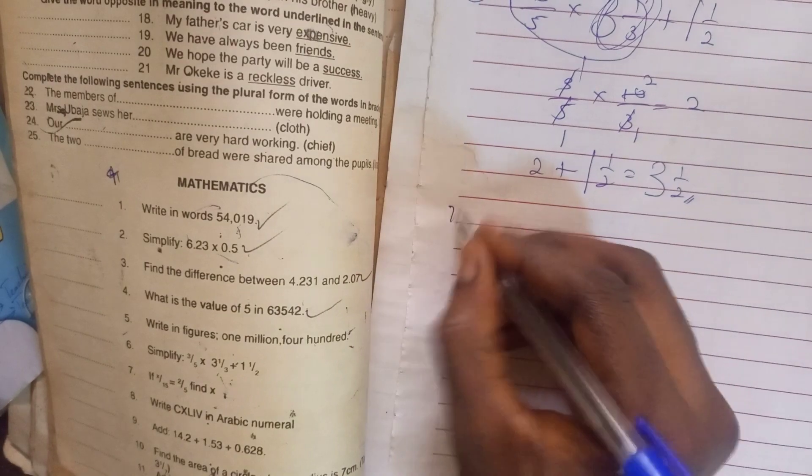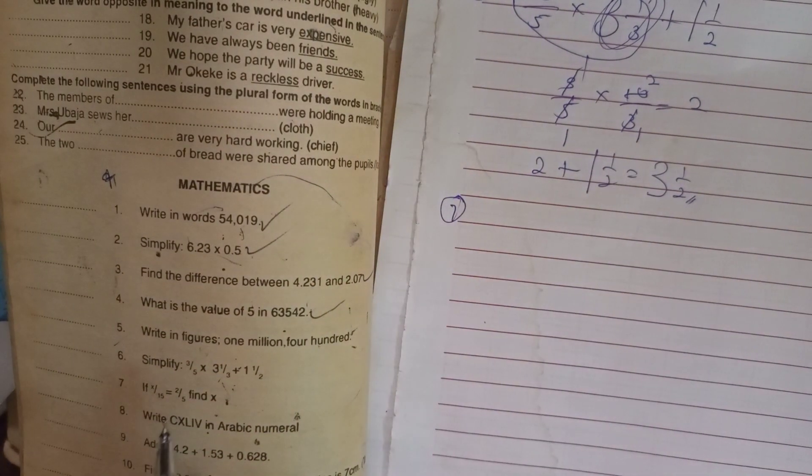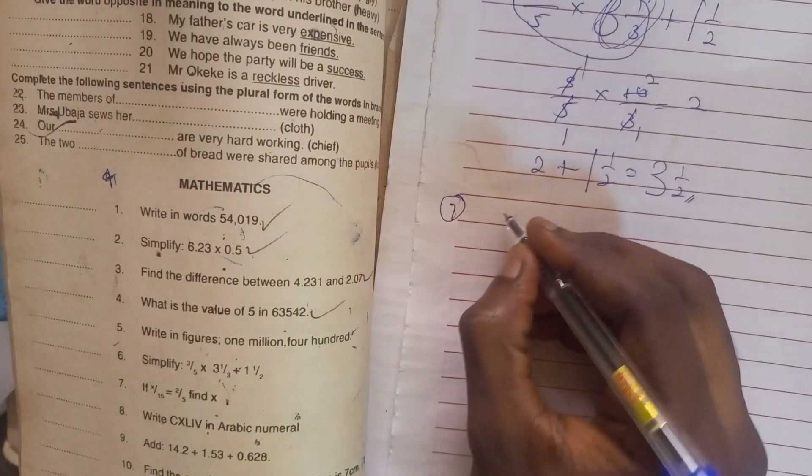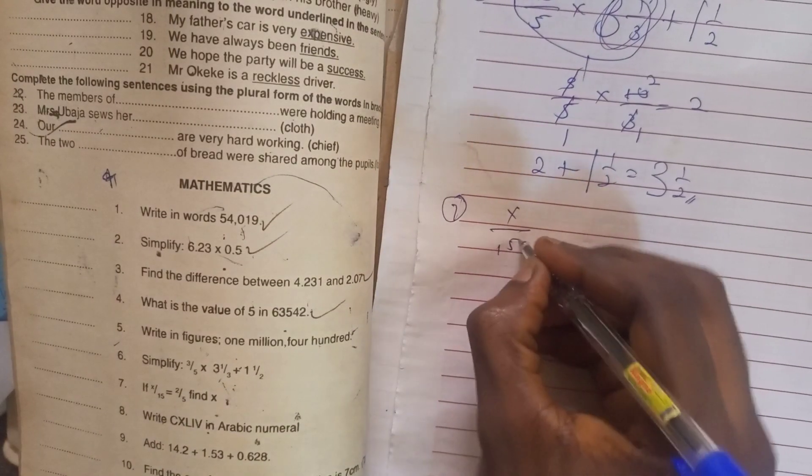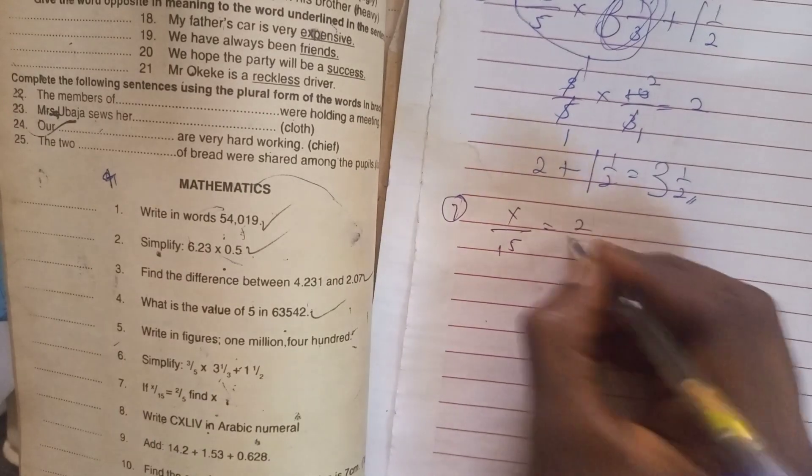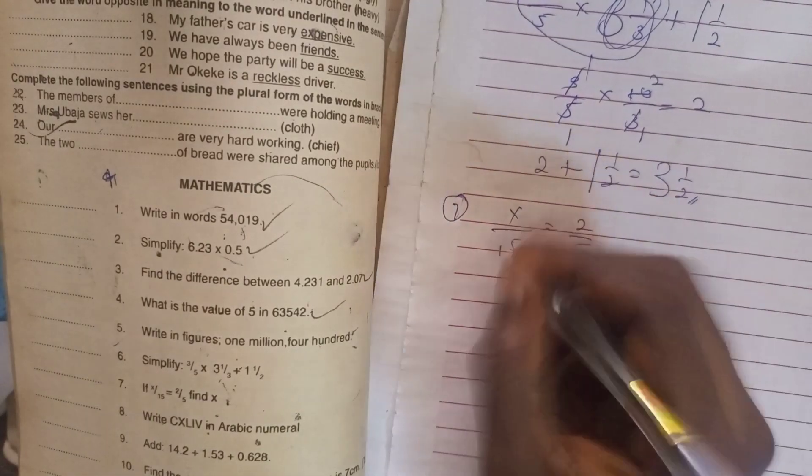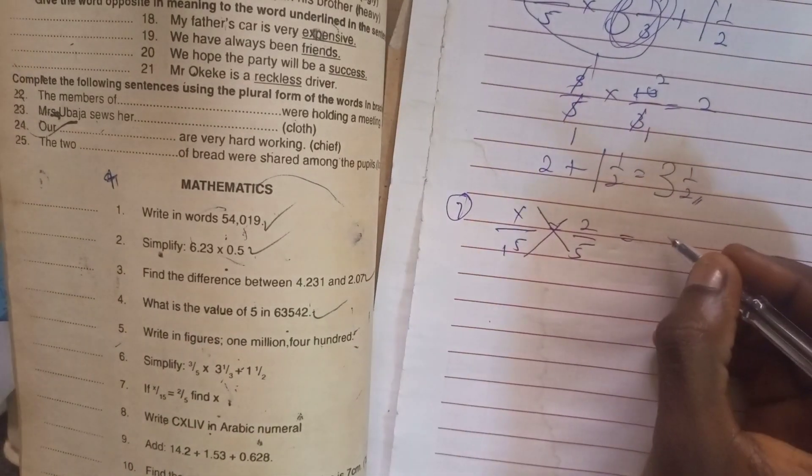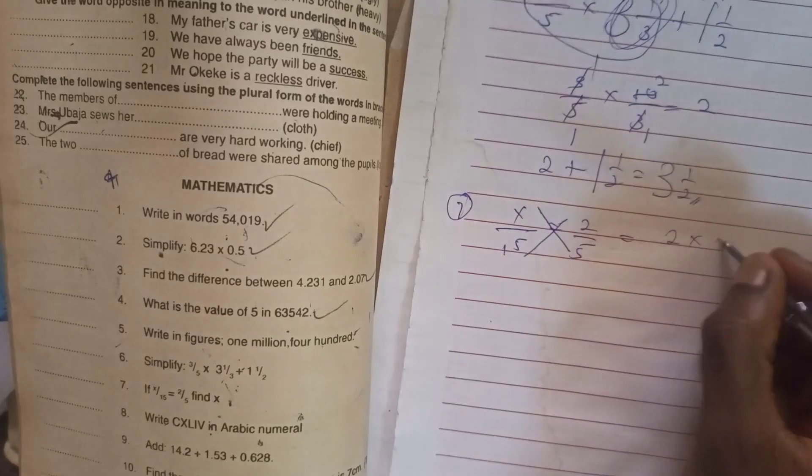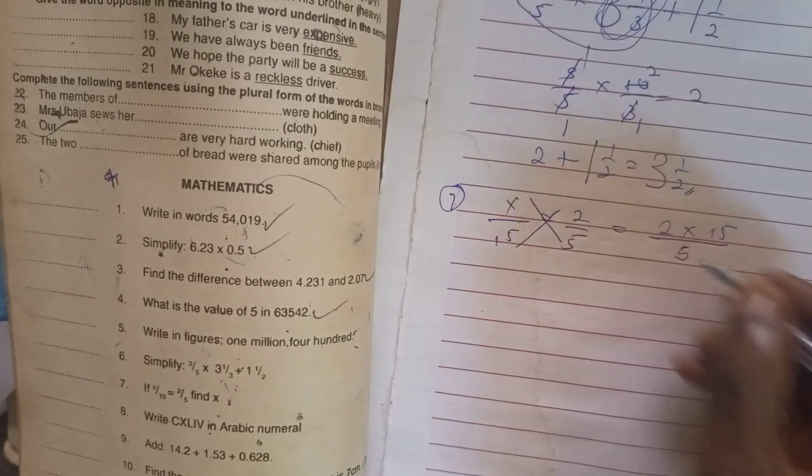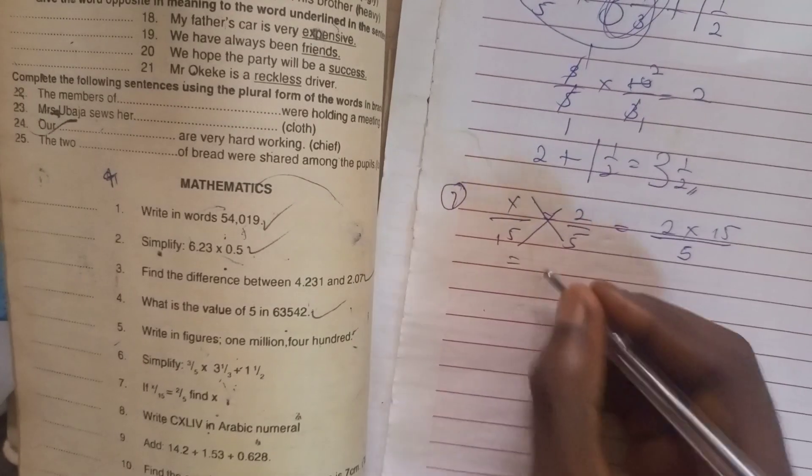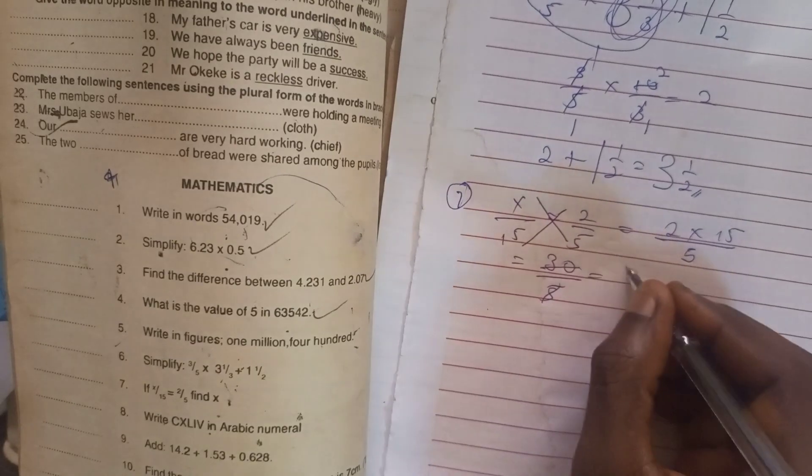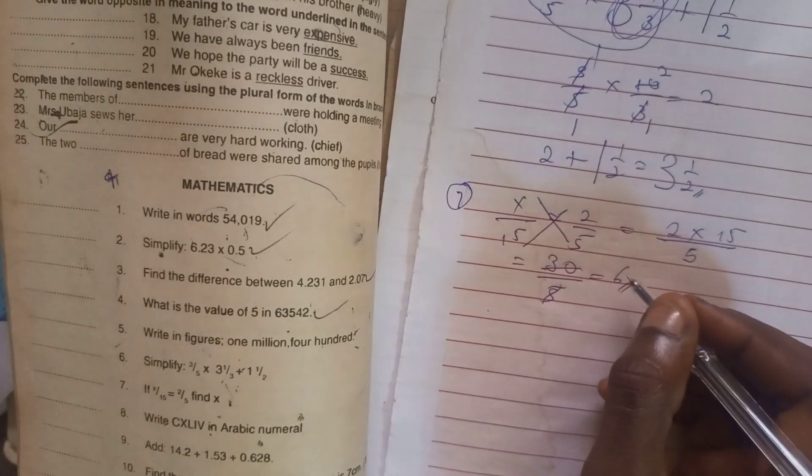Now let's go to the seventh one, which says if x over 15 is equal to 2 over 5, find x. What you do is x over 15 equal to 2 over 5. In this kind of thing we cross and multiply. We have 2 times 15 over 5. So 2 times 15 is going to give us 30 over 5. When we divide it, we have 6 as the answer.